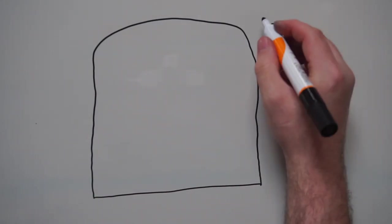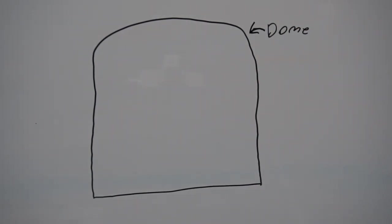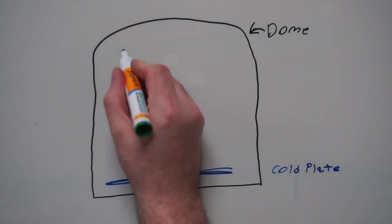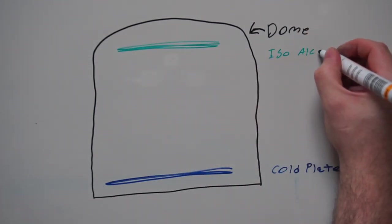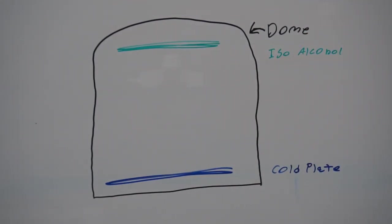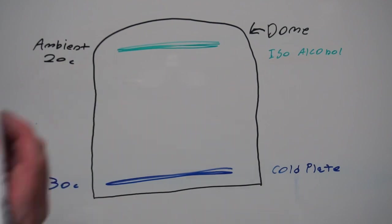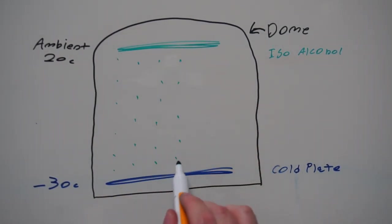First there is a glass dome to contain isopropyl alcohol vapors. At the bottom of the chamber is a cold plate that needs to be below minus 25°C, ideally minus 30°C is even better. At the top of the chamber is a sponge or piece of felt that is soaked in isopropyl alcohol. Provided the ambient temperature is hot enough the chamber will fill with alcohol vapor and a super saturated layer of alcohol will form just above the cold plate.